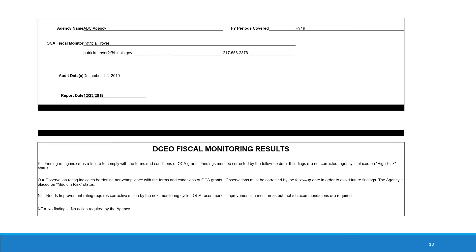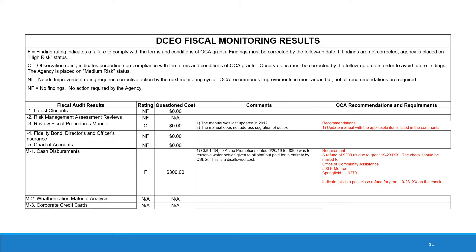This is an example of an OCA fiscal monitoring report. Here you'll find the definitions of finding, observation, needs improvement, or no finding. The next page shows the details of what the report looks like. Each area that we examined is listed in the left-hand column, your rating is in the next column, and if there's any question or disallowable cost, it will be listed in that column, along with OCA comments and recommendations.